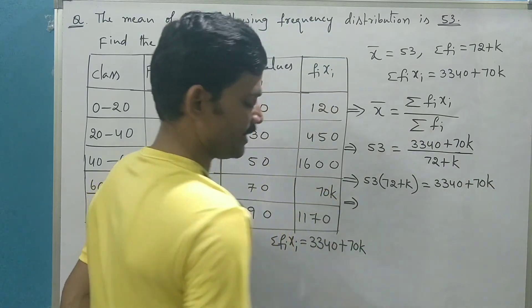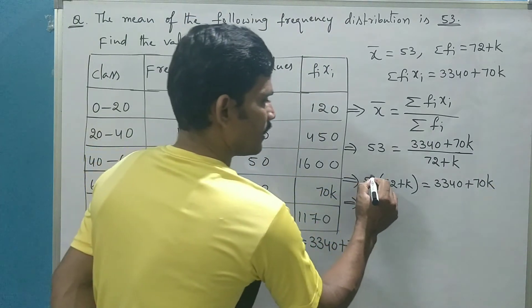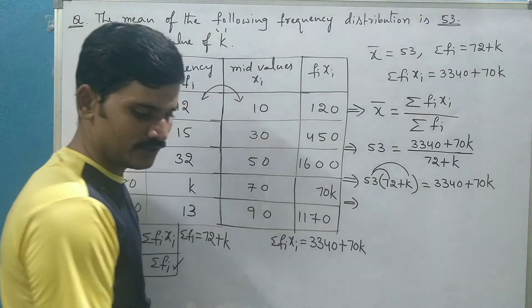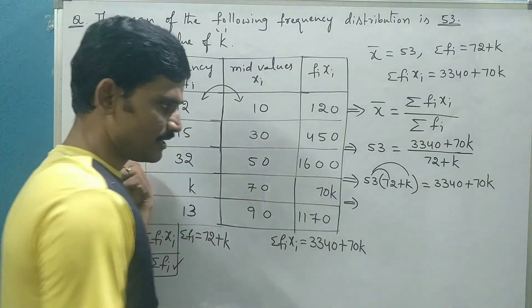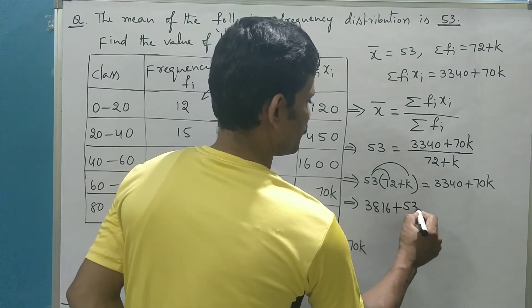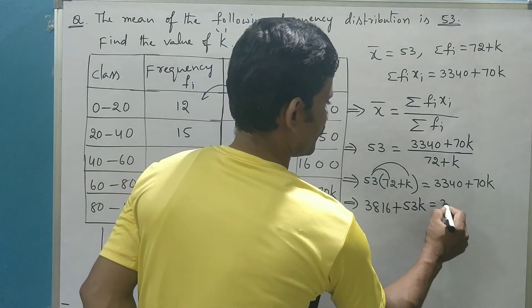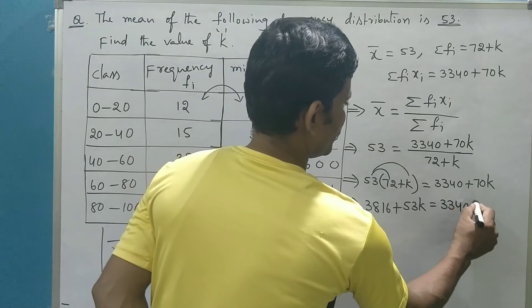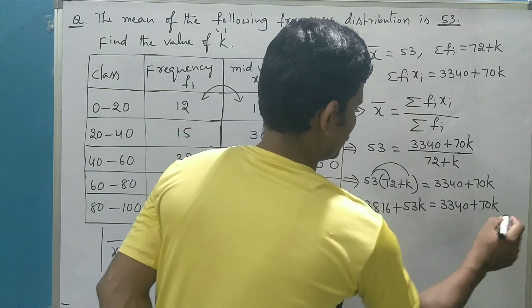If you multiply, that is apply the distribution, you will get the product as 3816 plus 53k is equal to 3340 plus 70k.